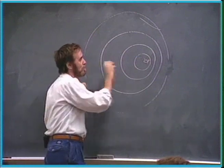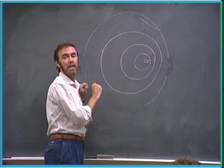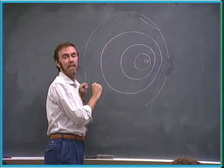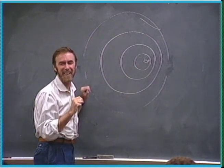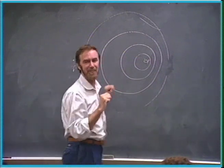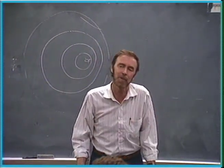That change in frequency due to motion of the source or the receiver is what we call the—named after a person. It is called the Doppler effect. That's right. The Doppler effect is the change of frequency when something moves towards you, away from you, that sort of thing. The change of frequency due to motion.